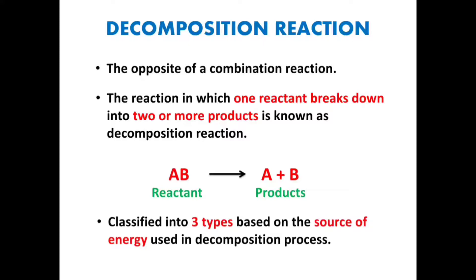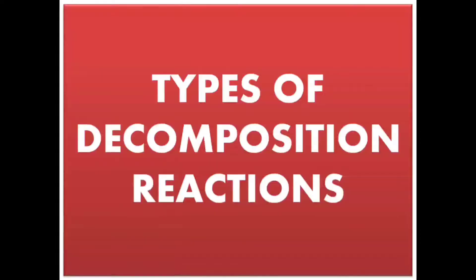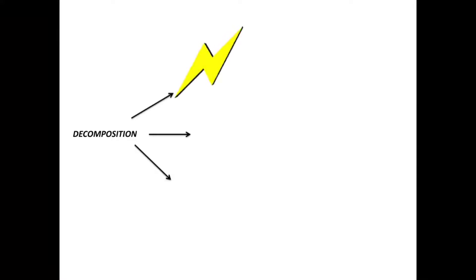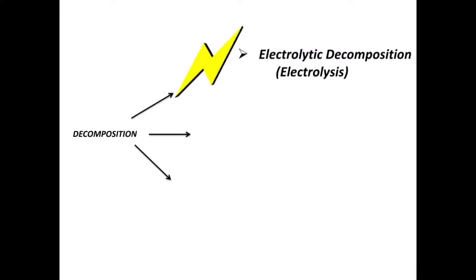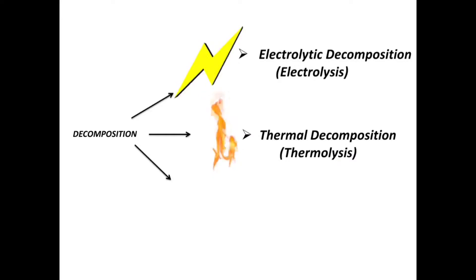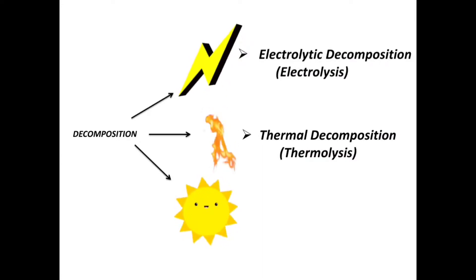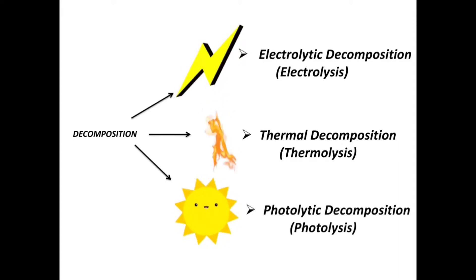Decomposition reactions are classified into three types based on the source of energy used in the decomposition process. When decomposition takes place in the presence of electricity, we call it electrolytic decomposition or electrolysis — splitting of the reactant in the presence of electricity. When it takes place in the presence of heat, it is known as thermal decomposition or thermolysis — splitting in the presence of heat energy. When it takes place in the presence of light, we call it photolytic decomposition or photolysis — splitting in the presence of light.